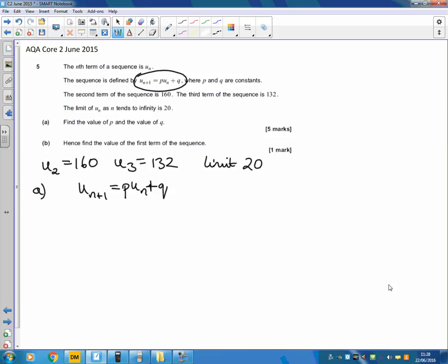So we've got the third term and the second term. The third term, n plus 1, must be p times the second term plus q. So 132 equals 160p plus q.